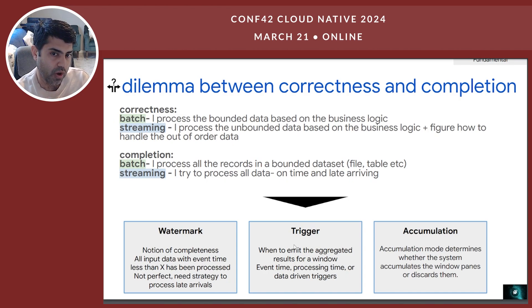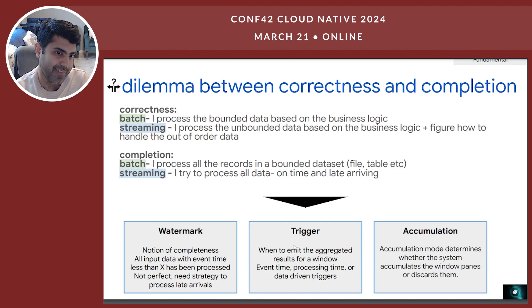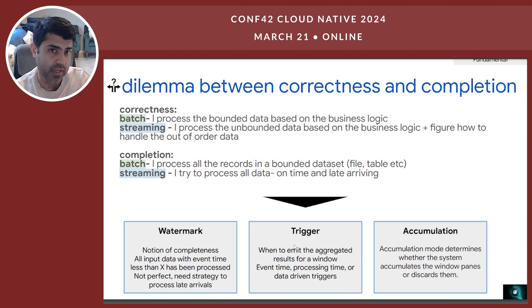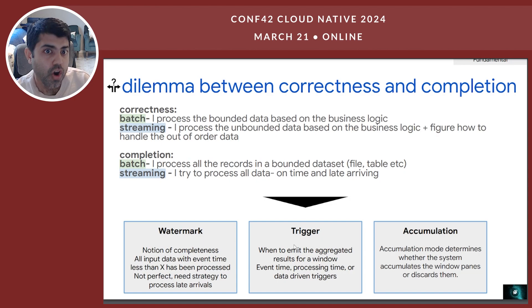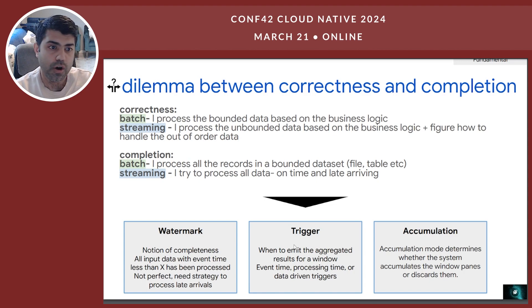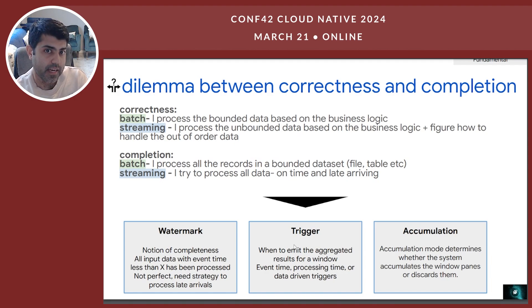Completion in the batch world means processing all records in a bounded data set — if a file had 10,000 records, you process all 10,000. Partial processing, say only 6,000 of 10,000 records due to schema issues, is incomplete. In streaming, completion means trying to process all data on time — but how much late-arriving data should you process? Should you process data that's 30 or 40 minutes late? There's always a dilemma between correctness and completion in streaming.